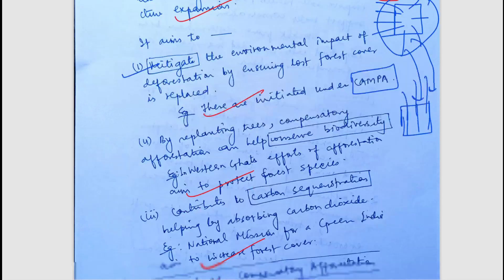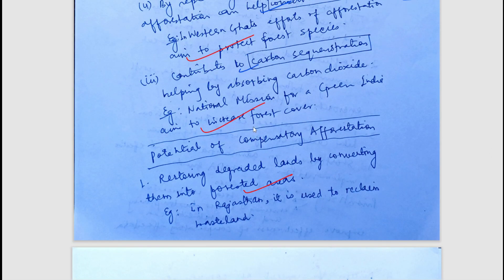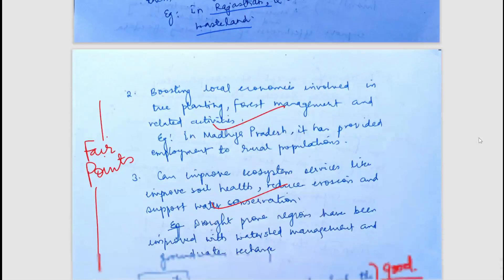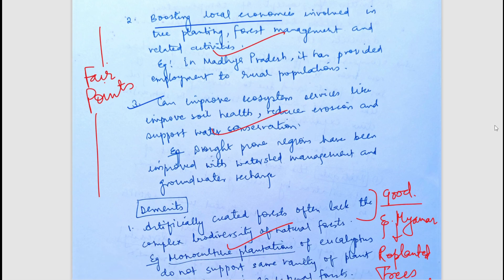The potential of compensatory afforestation includes restoring degraded land — for example, in degraded areas near the Aravalli range or near desert regions. It can help boost the local economy: community forests developed through compensatory afforestation can provide employment to rural populations and supply minor forest produce. It can also improve ecosystem services, as forests act as a filter to clean air and enhance soil health.